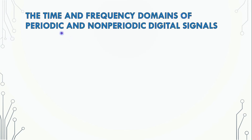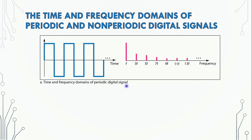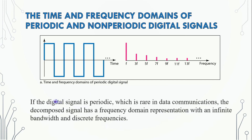Time and frequency domains of periodic and non-periodic digital signals. The periodic digital signal can be represented in the time domain or frequency domain. If the digital signal is periodic — which is rare in data communications — if the periodic signal has a frequency domain, it has infinite bandwidth, and the frequency is discrete. This discrete frequency characteristic matches with the periodic analog signal.